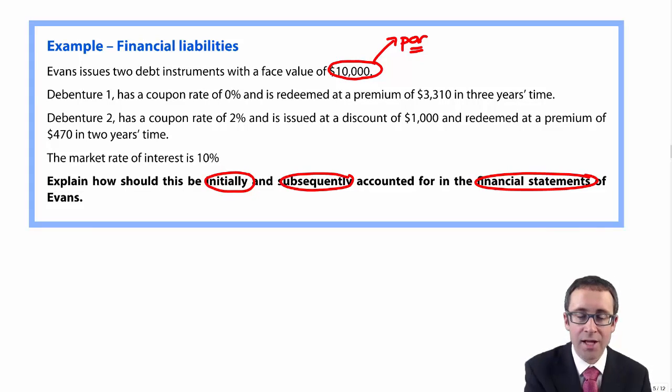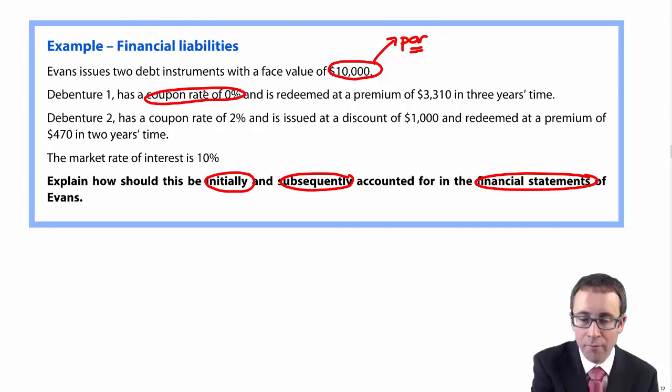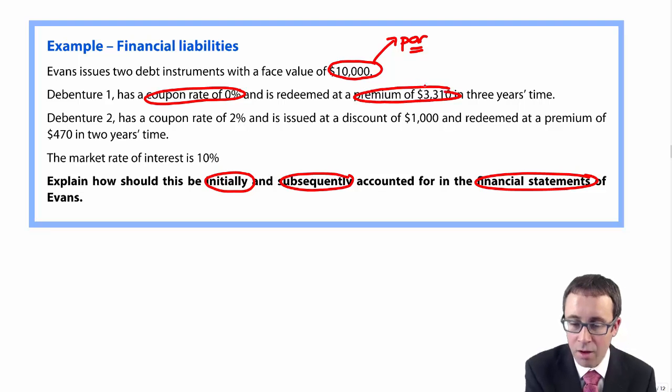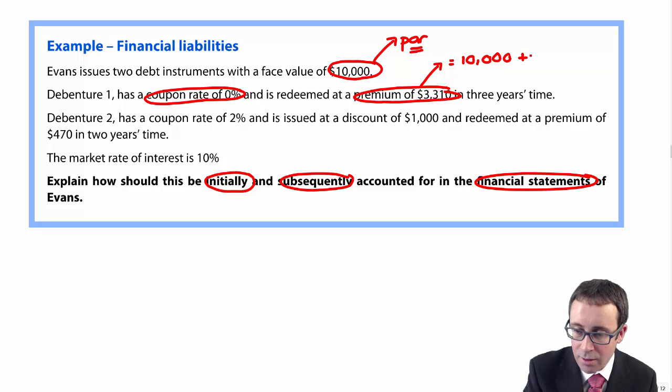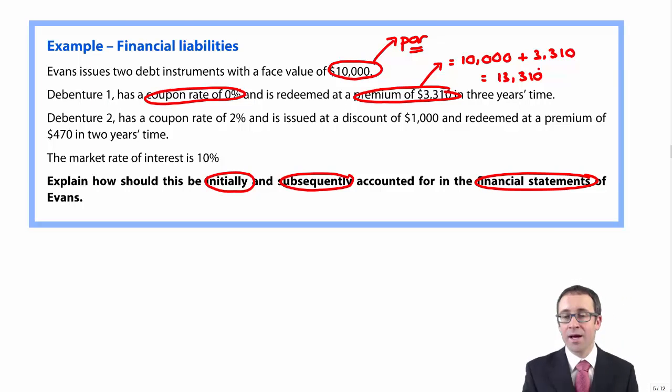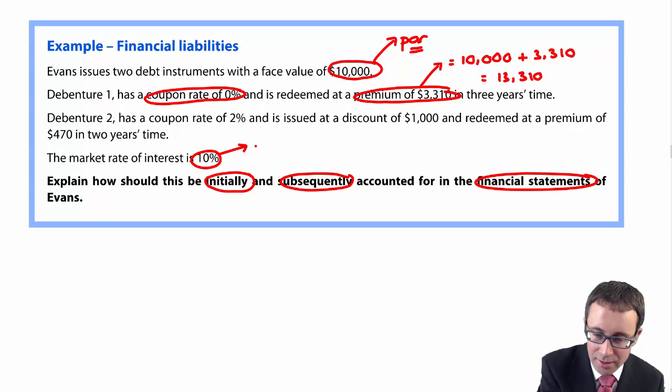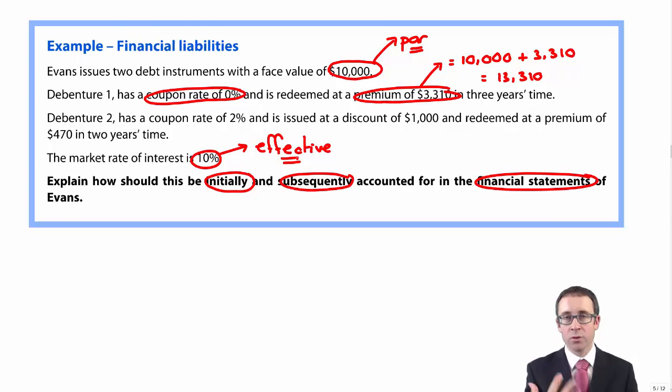Looking at debenture one, that's one of those zero coupon bonds. It has a coupon rate of 0% and is redeemed at a premium of $3,310 in three years time. When we talk about a premium, that is above par value. So if the par value is $10,000 and it's redeemed at $3,310 above, then it will be redeemed at $13,310 in three years time. The market rate of interest is 10%. Even though there's no coupon interest on this bond, we need to go with the substance. If we're issuing debt at 10,000 and repaying $13,310, that difference is essentially interest and the effective interest rate is 10%.